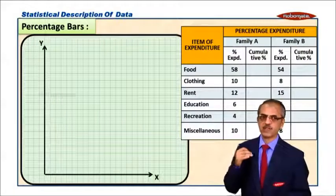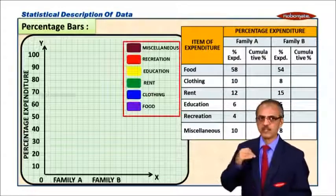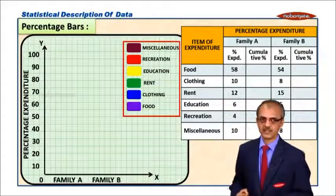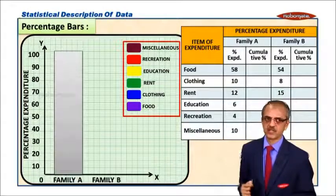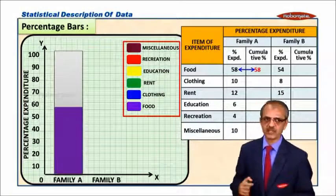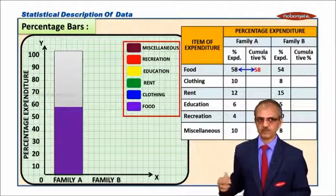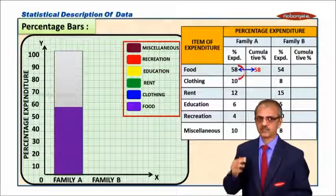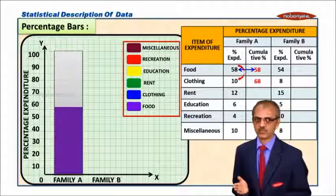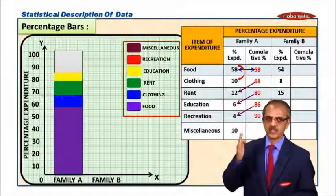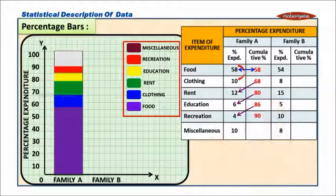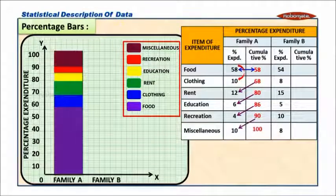Let us take a simple example. Family A and Family B - expenditure for food, clothing, rent, education, recreation, and miscellaneous. For Family A, raise to 100. 58 for food, 58 plus 10 for clothing equals 68, 68 plus 12 equals 80, 80 plus 6 equals 86, 86 plus 4 equals 90, and 90 plus 10 equals 100.